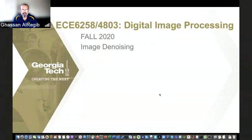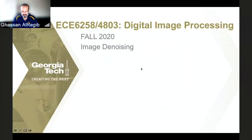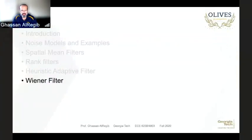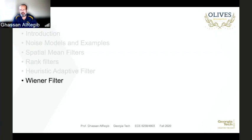Today we'll talk about image denoising. Last lecture we discussed noise models, the most common noise models, with some examples. Then we focused on denoising algorithms that utilize spatial attributes — spatial filters — the most common being averaging filters in some capacity, then ranking filters. We ended with a discussion on how to combine the benefits of these two classes of filtering algorithms, as in the trimmed mean filter.